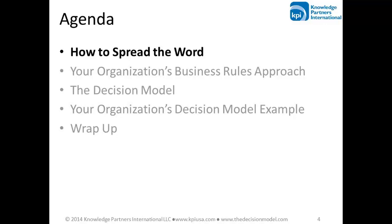There are three common paths for introducing it. The first is a high-level path where the decision model is introduced through an existing center of excellence, such as a business process modeling center, project management center, or enterprise architecture. Another high-level path is the decision model coming in response to a business crisis or opportunity for which no other solution seems to work. We have had that experience in several situations where they had tried business rules approaches, technology, or different ways of modeling business processes, and we came in with our decision-aware business processes and the decision model and were able to solve some crises.